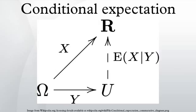Basic properties: All the following formulas are to be understood in an almost sure sense. The sigma algebra could be replaced by a random variable. Pulling out independent factors: if X is independent of G, then E[X|G] = E[X]. If Z is independent of G, then E[XZ|G] = E[X|G]·E[Z]. Note that this is not necessarily the case if Z is only independent of X and of G separately. If X and Z are both independent of G, then the result also holds. Stability: if X is G-measurable, then E[X|G] = X. If Z is a random variable, then E[Z|Z] = Z in its simplest form.